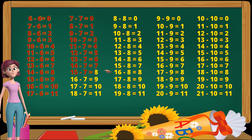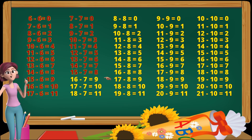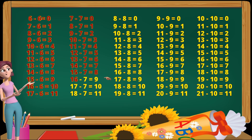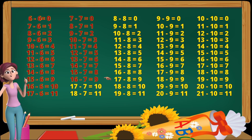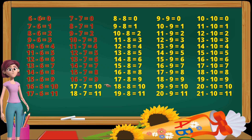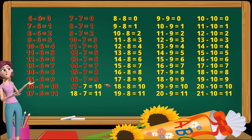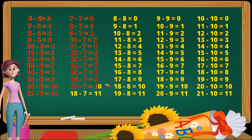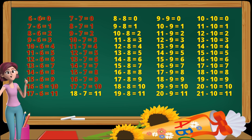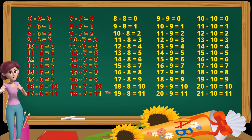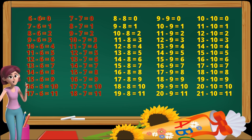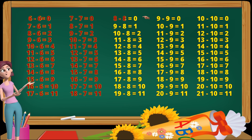15 minus 7 equals 8. 16 minus 7 equals 9. 17 minus 7 equals 10. 18 minus 7 equals 11.